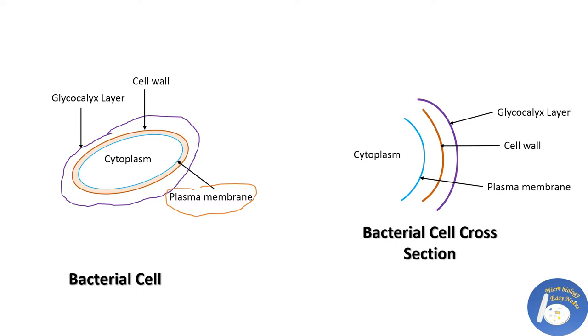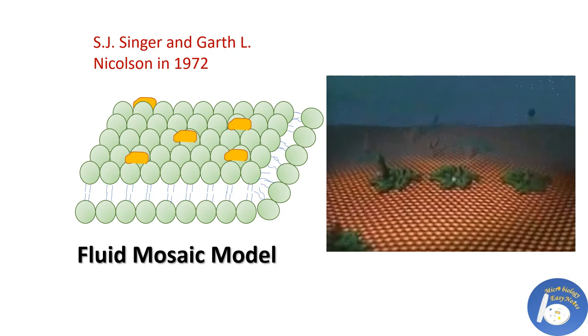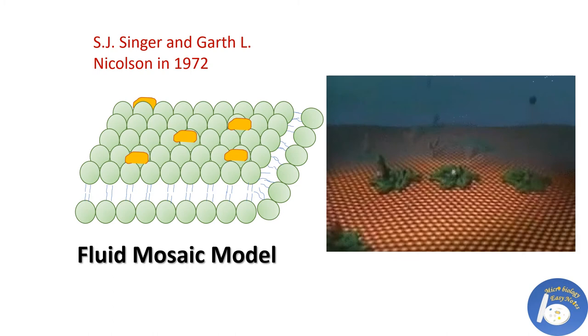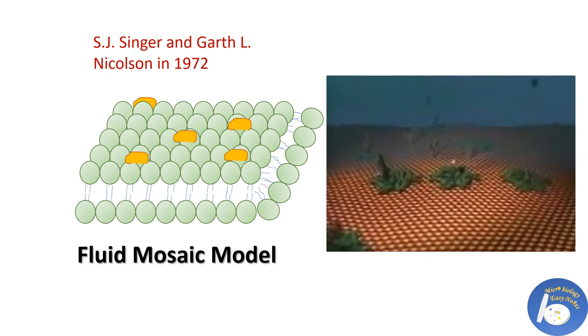The structure of plasma membrane can be defined by a fluid mosaic model which is given by S.J. Singer and Garth Nicolson in 1972. As per this model, plasma membrane is a mosaic of different biomolecules.